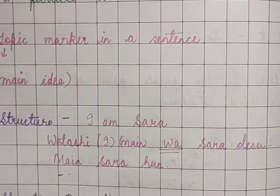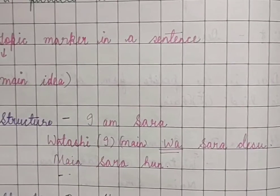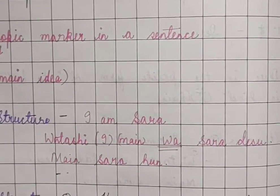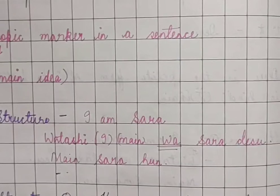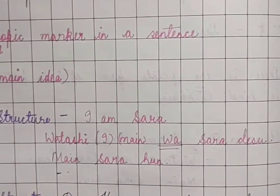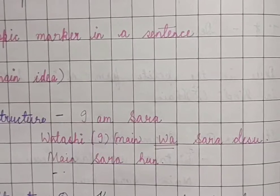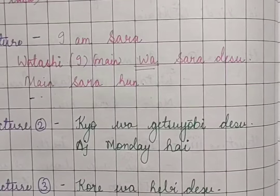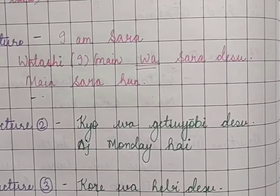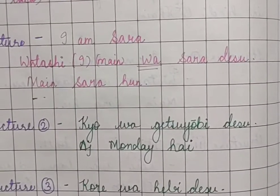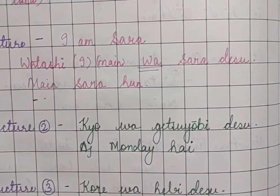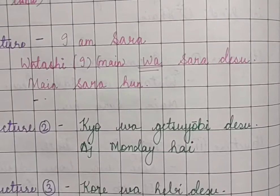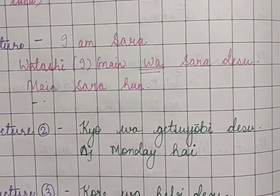For example: 'I am Sara.' What is the topic? The topic is 'I.' So we use 'Watashi wa Sara desu' — 'I am Sara.' We discussed this last lesson as well. Next structure: 'Kyou wa Getsuyoubi desu.' Getsuyoubi means Monday. What is the topic? Today — 'kyou.' So 'Kyou wa Getsuyoubi desu' means 'Today is Monday.'